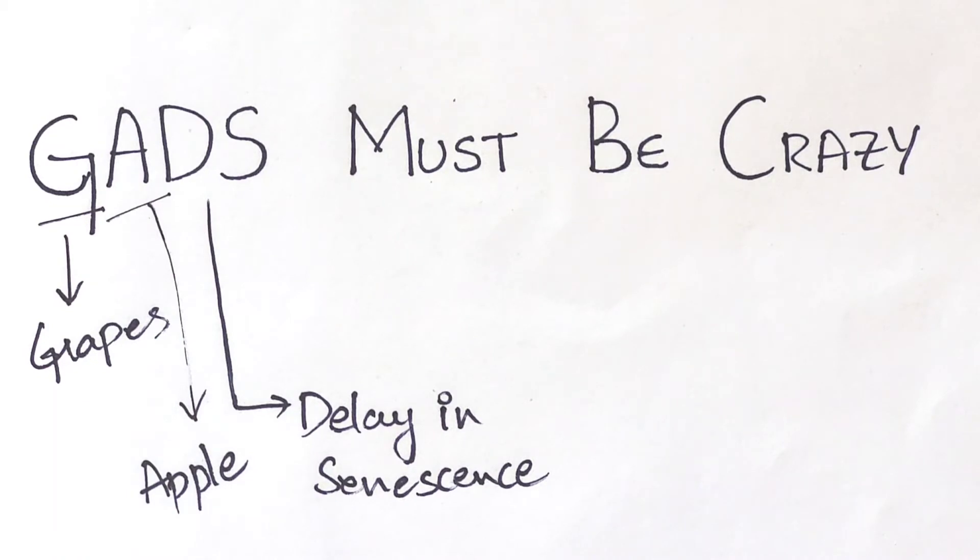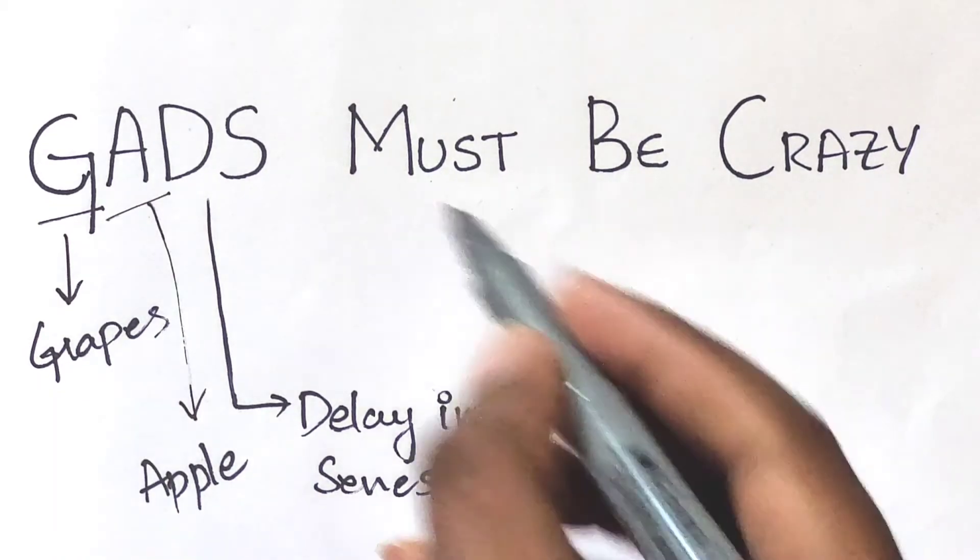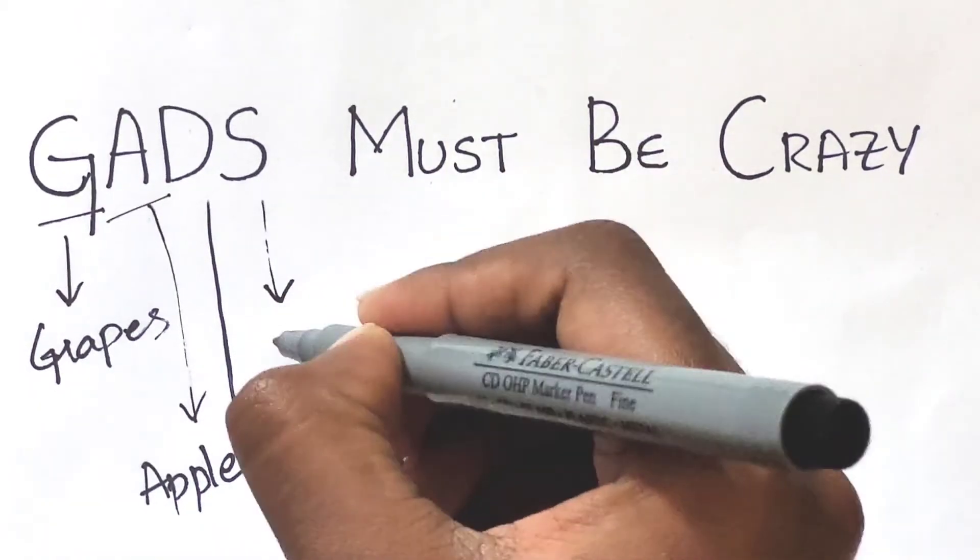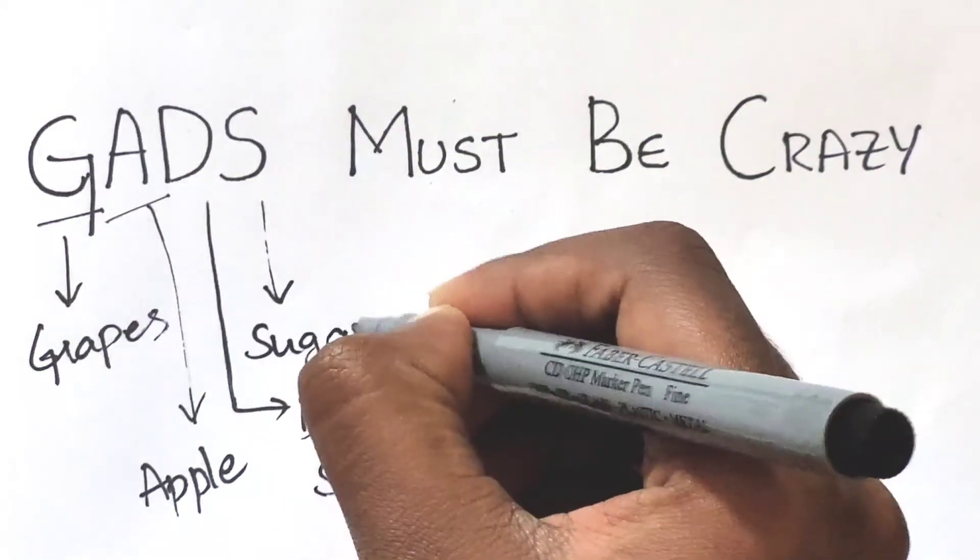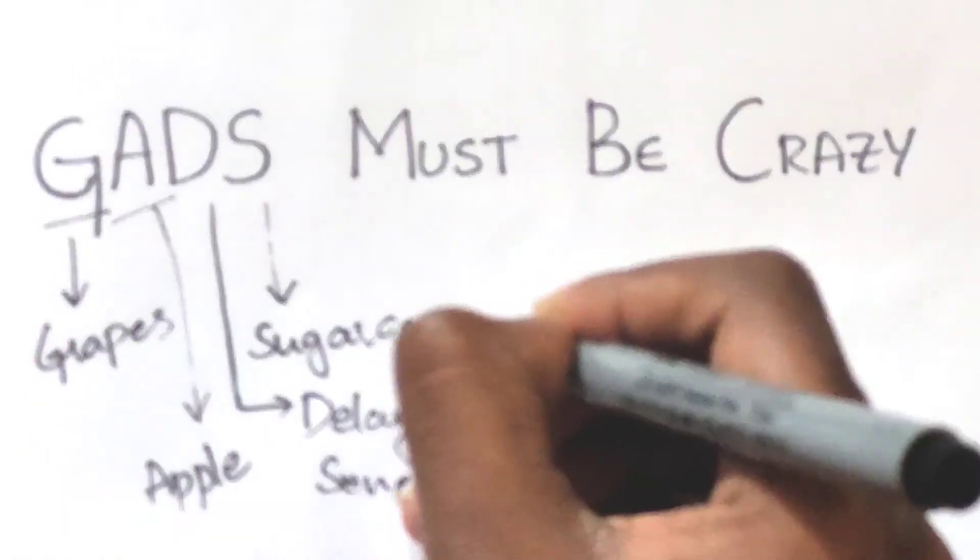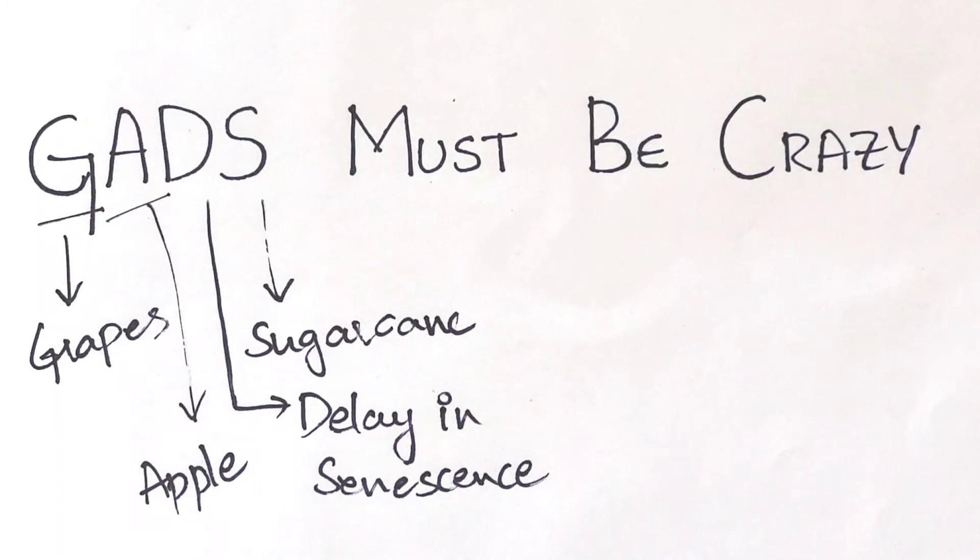So it helps in increasing the market period. S for sugarcane. Gibberellic acid helps in increasing the length of the stem. Sugarcane yield also get increases.